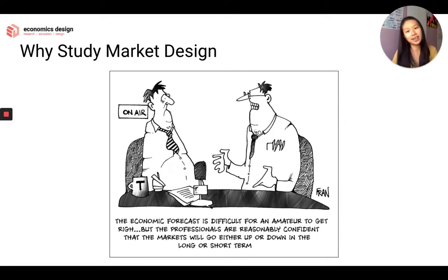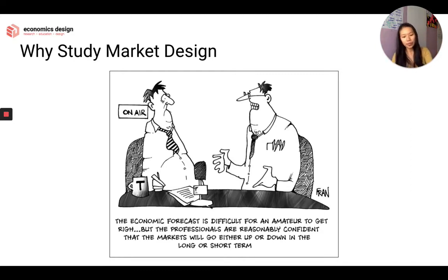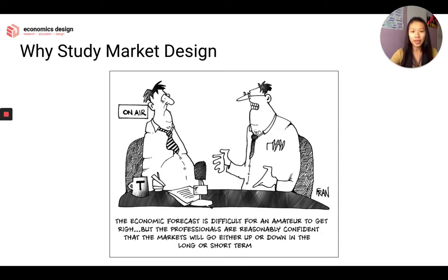With all these rules, incentives, and punishments, we try to constrain the actions and behaviors of people in the market so that they behave in the way we design them to. That's a big difference from traditional economics — instead of observing and predicting, we are proactively designing how people should behave. And that's extremely interesting.